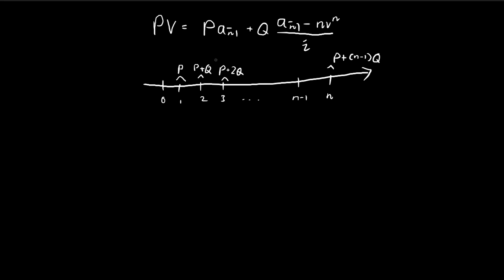In the last video we derived a formula for the present value of a payment scheme that pays P dollars at time 1, P plus Q dollars at time 2, P plus 2Q at time 3, all the way to time n. You can see that the payments are increasing arithmetically. We derived this formula in our last video.